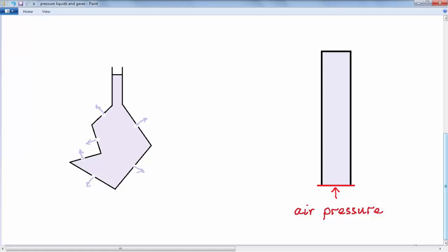In fact, the air pressure, which we will look at in a later lesson, produced by the atmosphere, is actually very, very large indeed. And it's able to support a column of water up to around about 10 meters of height, because the air pressure is so great.